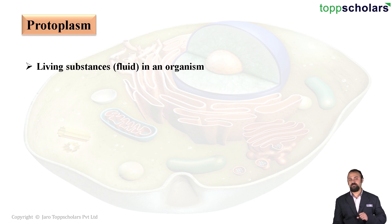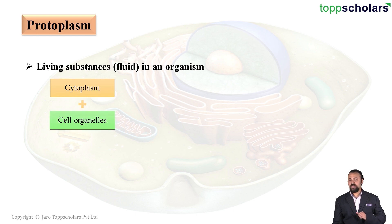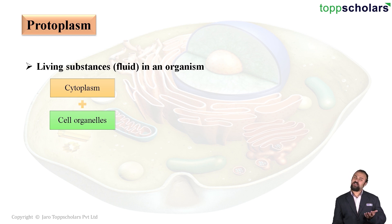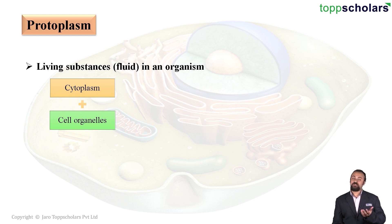To be precise, the living part of the cell can be known as the protoplasm. Let us take a look. Inside a cell, we have the cytoplasm, and then we have the various cell organelles like the Golgi body, the endoplasmic reticulum, plastids, lysosome, ribosomes, etc. All of these are the cell organelles.